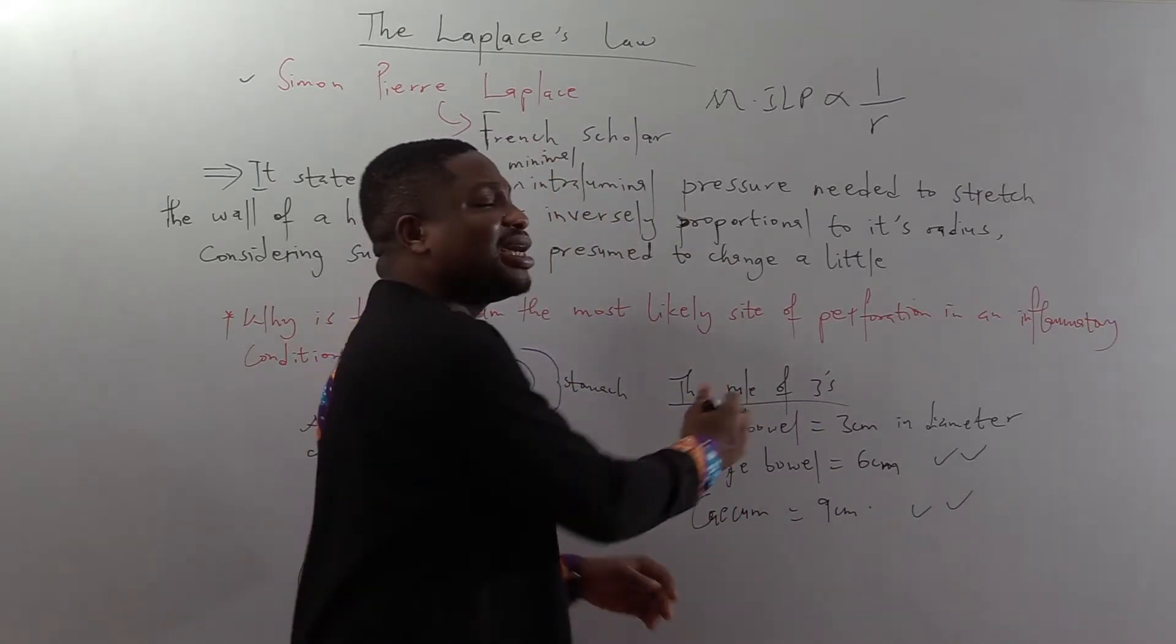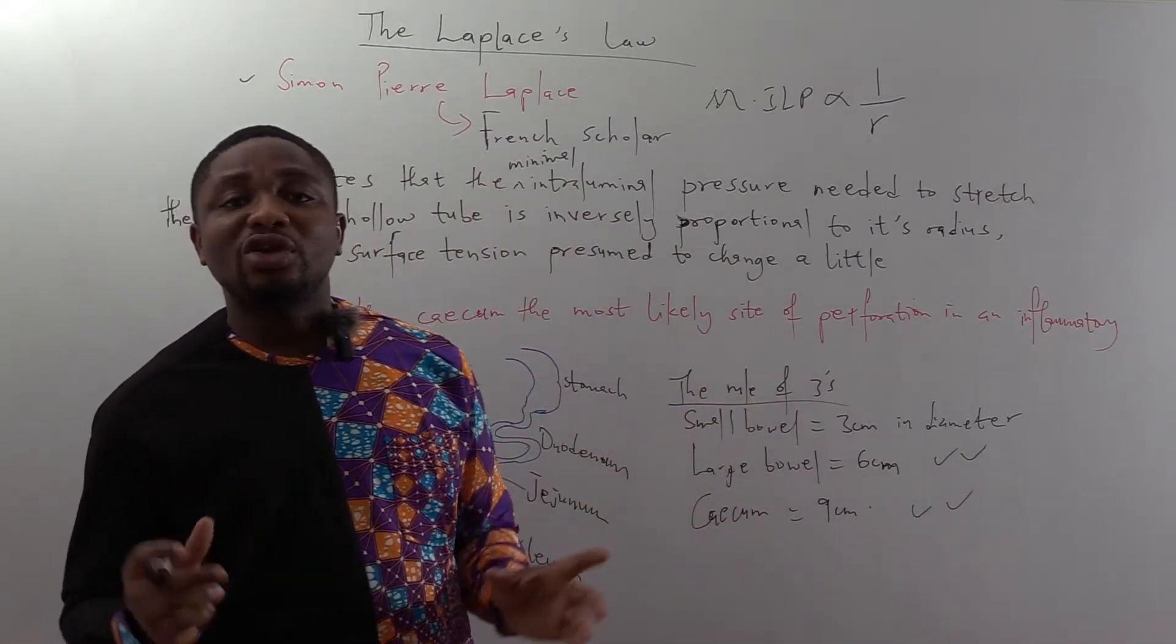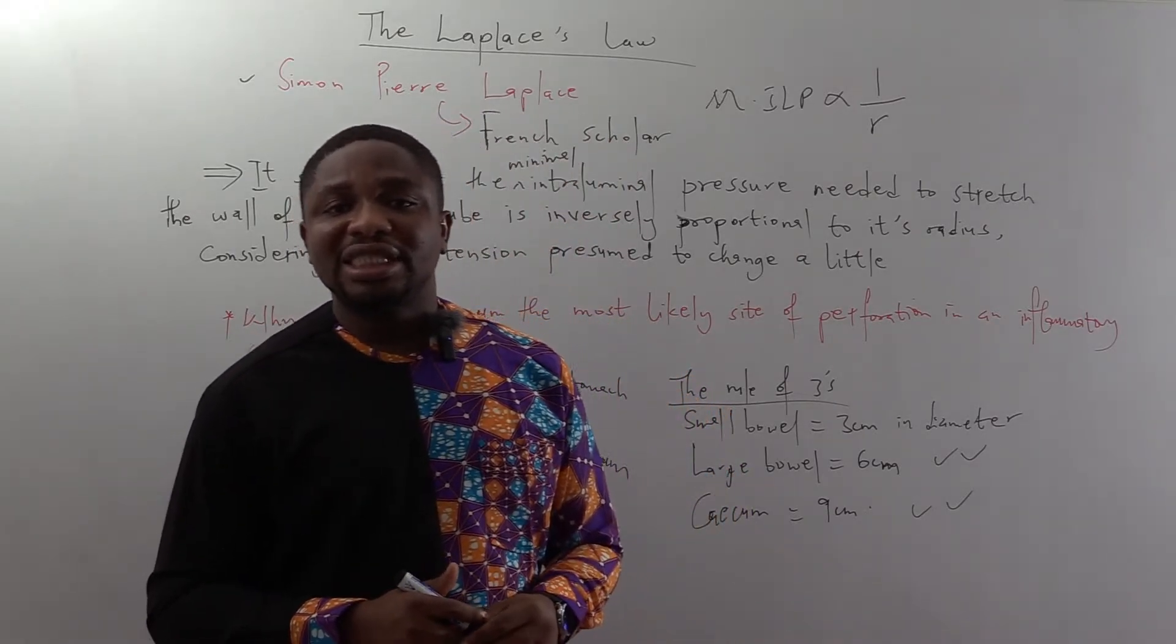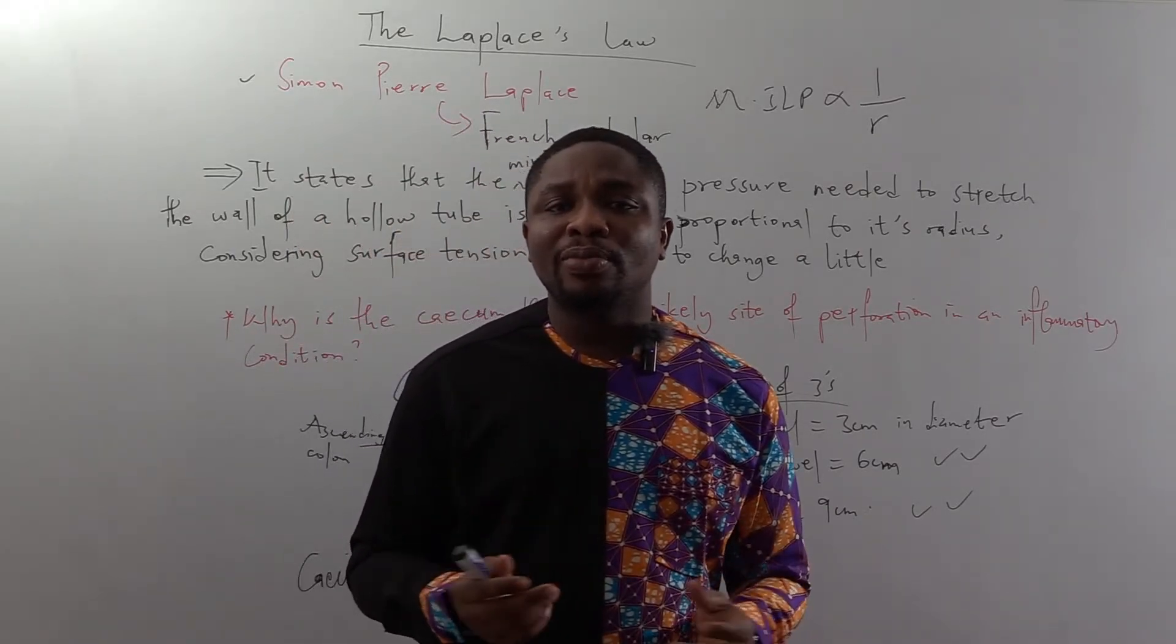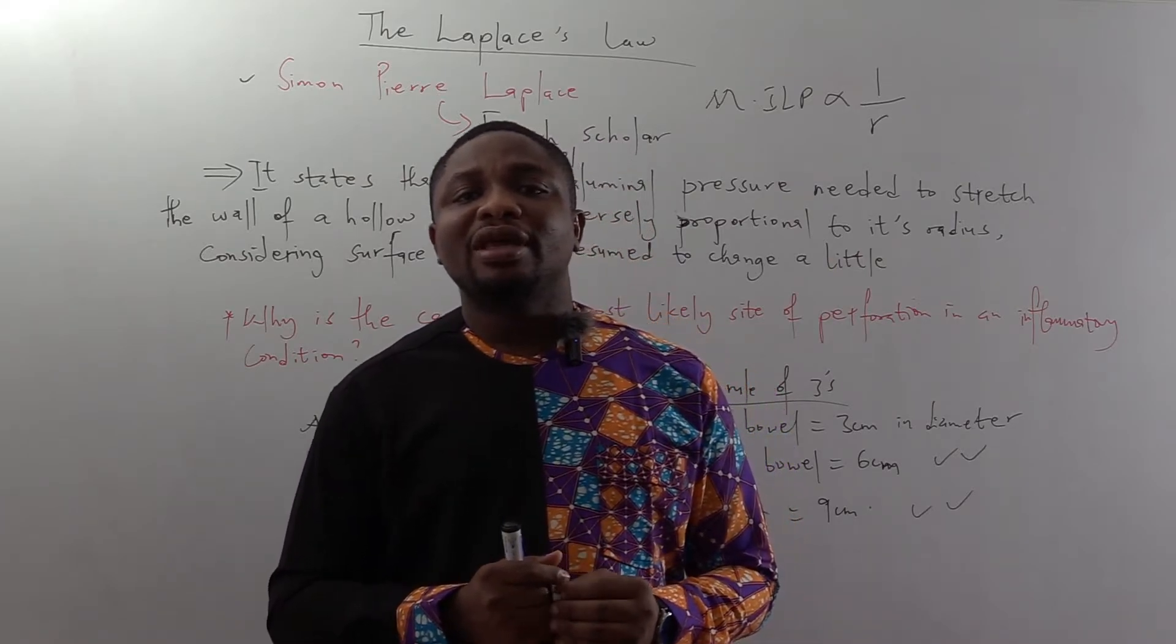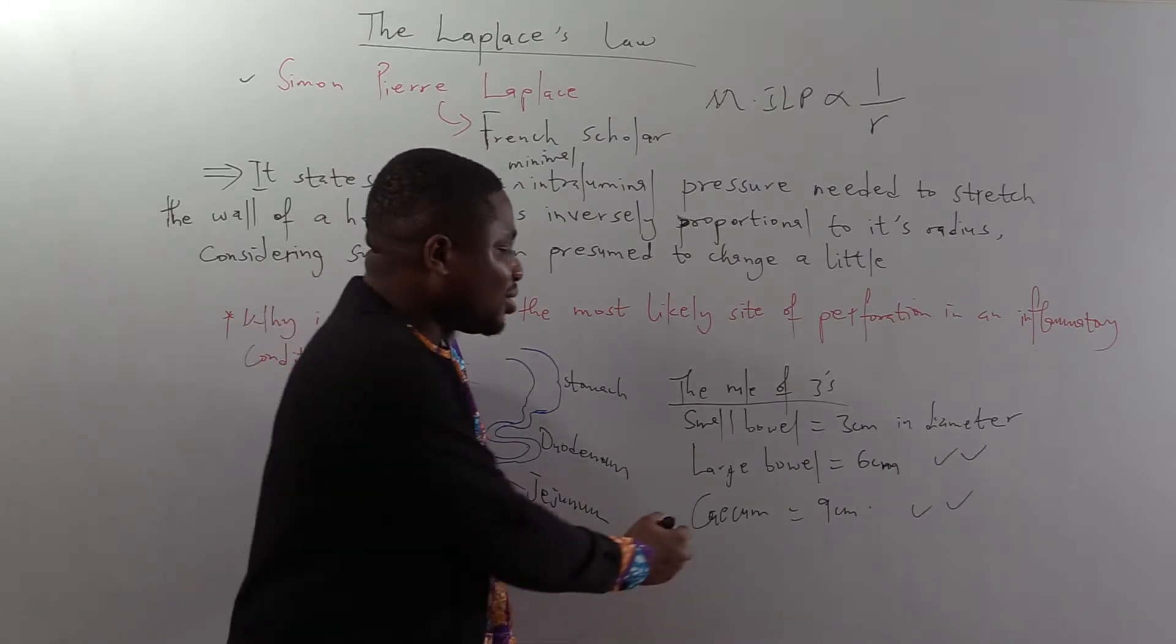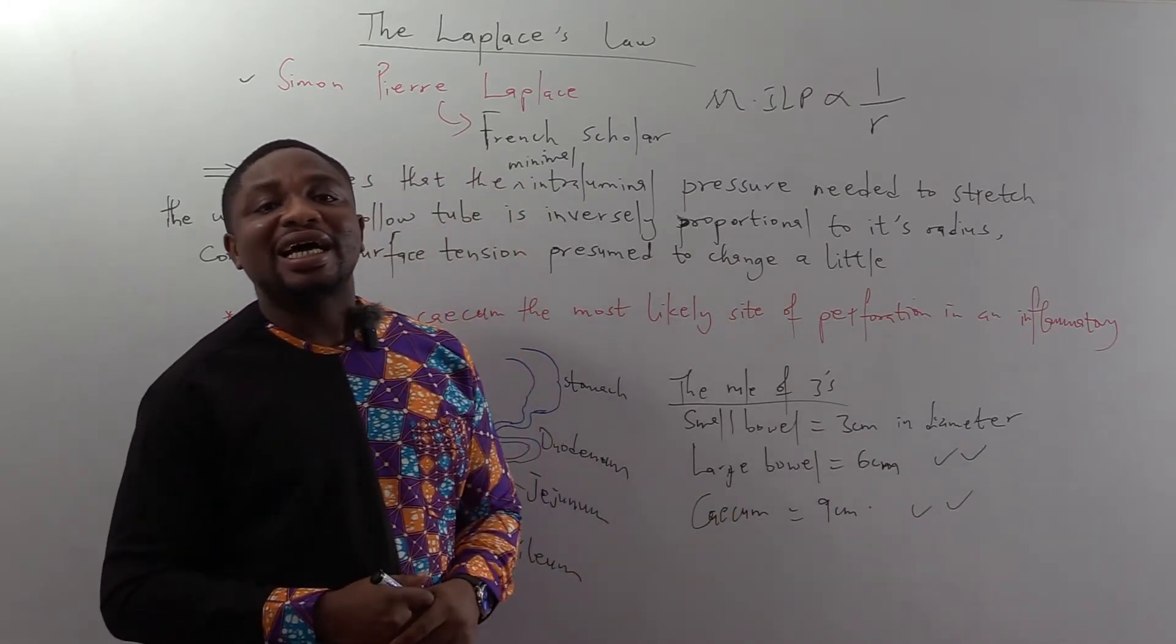We will say that the diameter of the lumen of the small bowel is approximately three centimeters. That of the large bowel is approximately six centimeters. And then that of the cecum is nine centimeters.